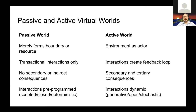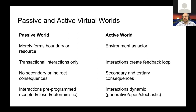Interactions in passive worlds are pre-programmed — scripted, closed, and deterministic. An active world, by contrast, treats the environment itself as an actor. It has the ability to act independent of the player's intent, interactions create a feedback loop where the player affects the environment and vice versa, there are secondary and tertiary consequences that are less predictable, and the interactions are dynamic and stochastic. Minecraft and No Man's Sky are good examples of generative worlds.